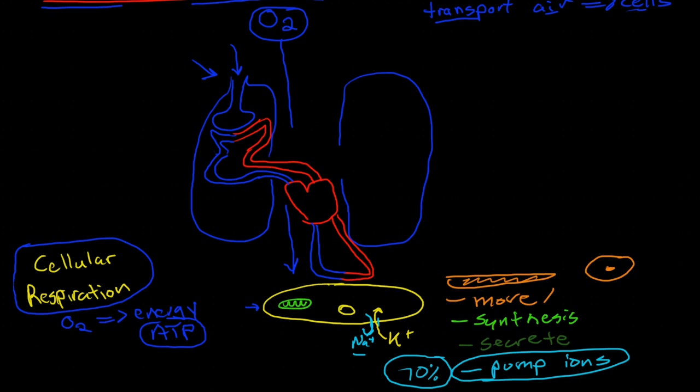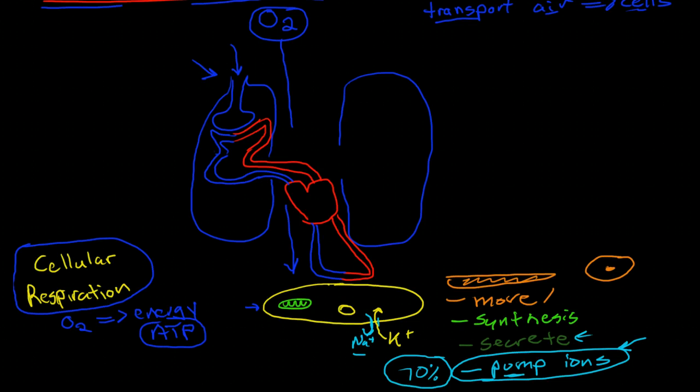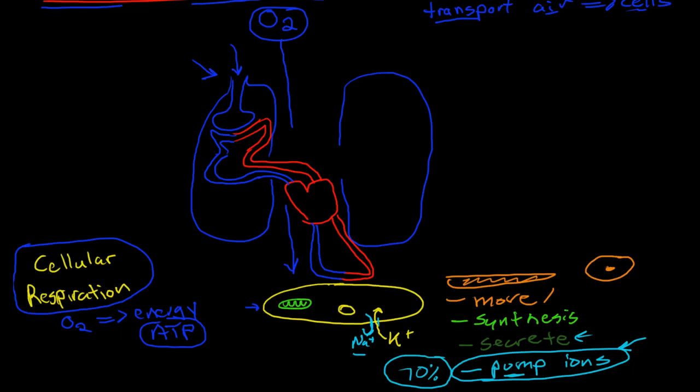So if our cells don't have access to energy, even our cells that don't move and don't synthesize a whole lot and don't secrete a whole lot, if our cells don't have energy even for a few moments, then they will lose the ability to pump ions and they will quickly die. So they need a constant supply of energy.